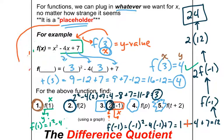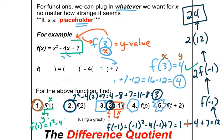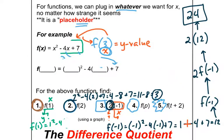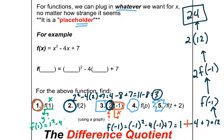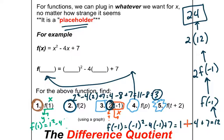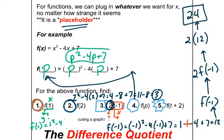How about number 4? f of p — that's kind of strange because what is p? It's not a number, it's just a letter. But remember, it's just a placeholder — plug it in. f of p: p goes in for every x, so it would be p squared minus 4 times p plus 7. That's just p squared minus 4p plus 7. There's nothing more to do with it — no more algebra, no factoring, no solving. We don't know what the value of p is, so we just leave it. That's number 4, all done.